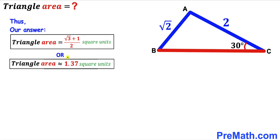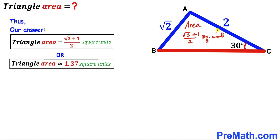This is approximately equal to 1.37 square units. So the area of triangle ABC is (√3 + 1) / 2 square units — that's our final answer. Thanks for watching, and please don't forget to subscribe to my channel for more exciting videos!